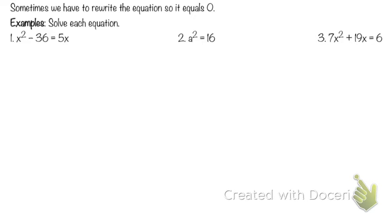What's over here instead of zero right now? 5x. So how do we get rid of a 5x? Subtract 5x — the same rules we've been following. So subtract 5x now. If I do something to one side, I do it to the other.